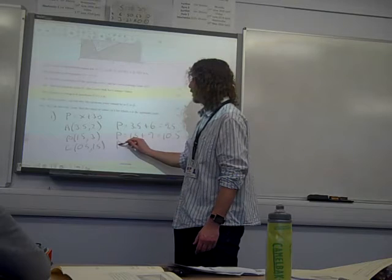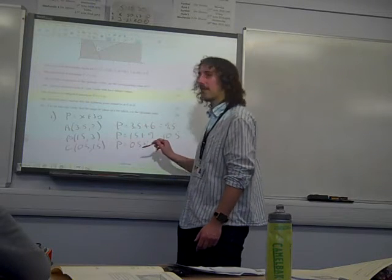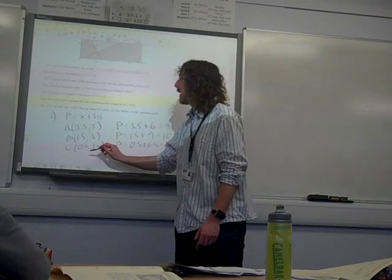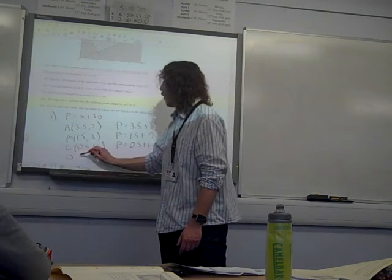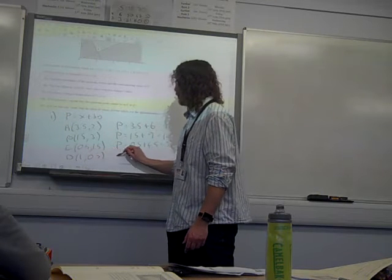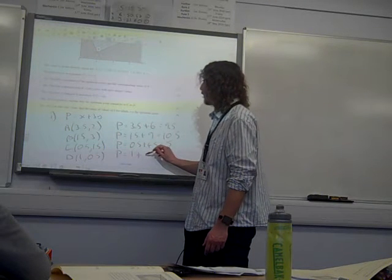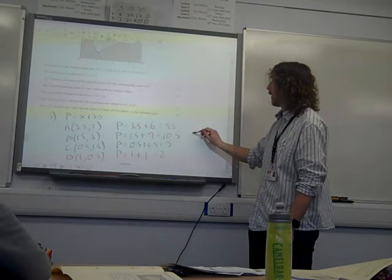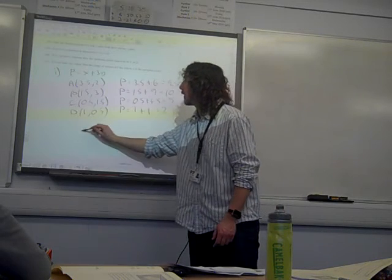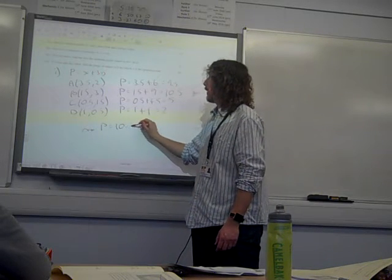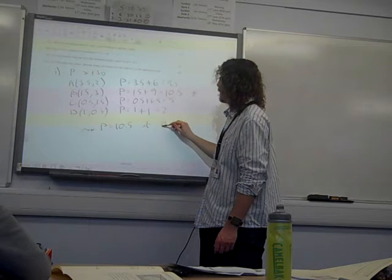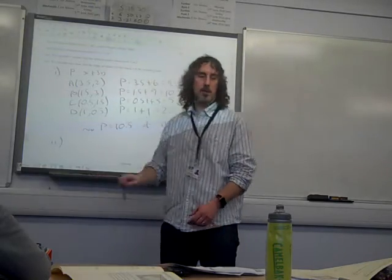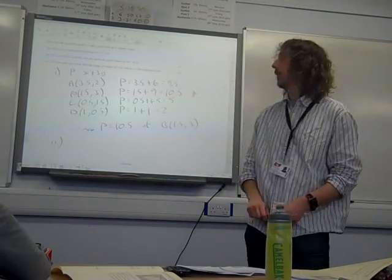C is (0.5, 1.5), so P is 0.5 plus 3 times 1.5, which is 4.5, giving 5. And D is (1, 0.5), so P is 1 plus 1, which is 2. We're looking for the best — the best is 10.5. So the maximum is 10.5 at B, which is (1.5, 3). That is the most thorough answer to that question.